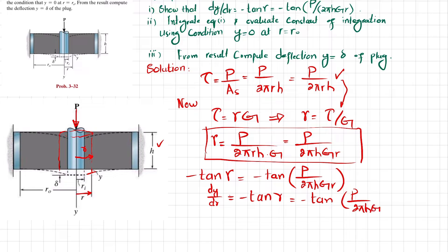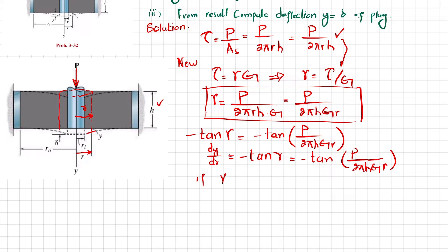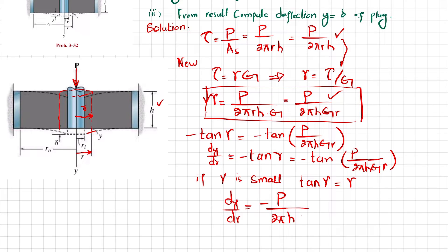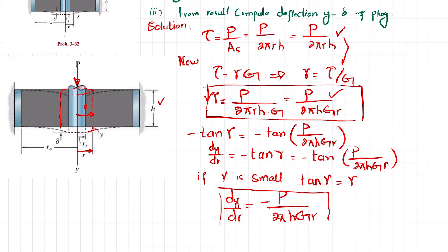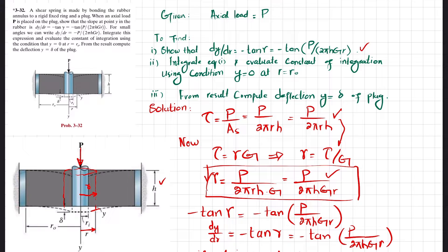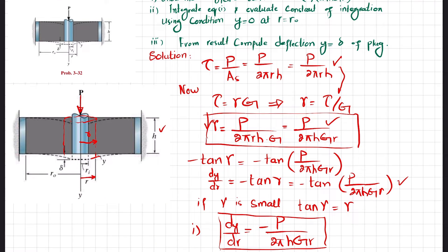If γ is very small, then tan(γ) ≈ γ, as also given in the problem. By that we can see that γ = P / (2πhGr), so dy/dr becomes equal to -P / (2πhGr). We have now proved that dy/dr = -P / (2πhGr). This is the answer to Part 1: dy/dr = -tan(γ) and for small γ it reduces to this expression.